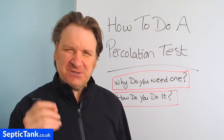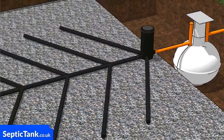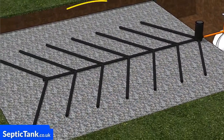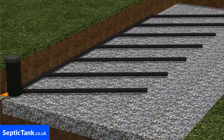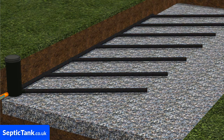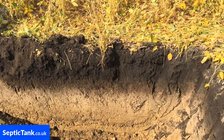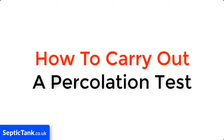So what is a percolation test? A percolation test determines if the ground is suitable for a soakaway or not, and that the wastewater that enters the soakaway from the septic tank can drain away naturally into the soil. Some examples of soil with good percolation characteristics would be chalky soil, sandy soil, or loamy soil.